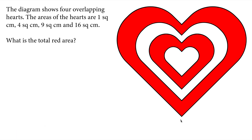What is the total red area? Pretty much we are subtracting two hearts from the bigger hearts. So this bigger heart — the biggest heart area is 16. The smaller one is 9, then the next one is 4, and the smallest one has 1. Pretty much we are subtracting smaller hearts from the bigger hearts to exclude the white areas.